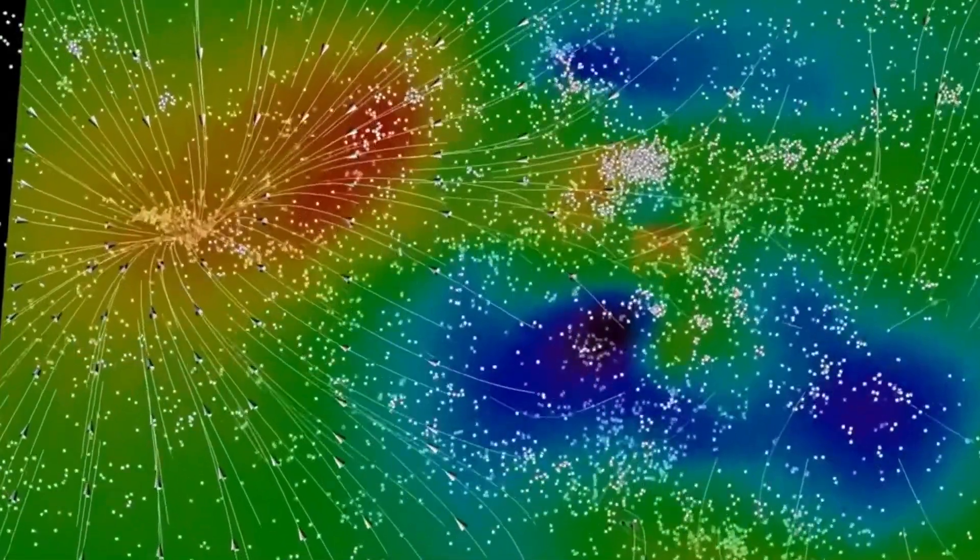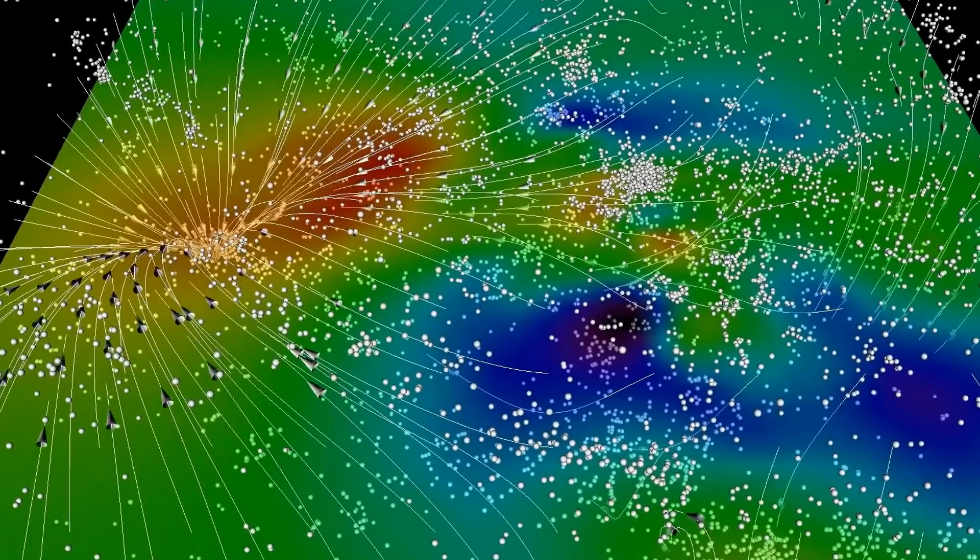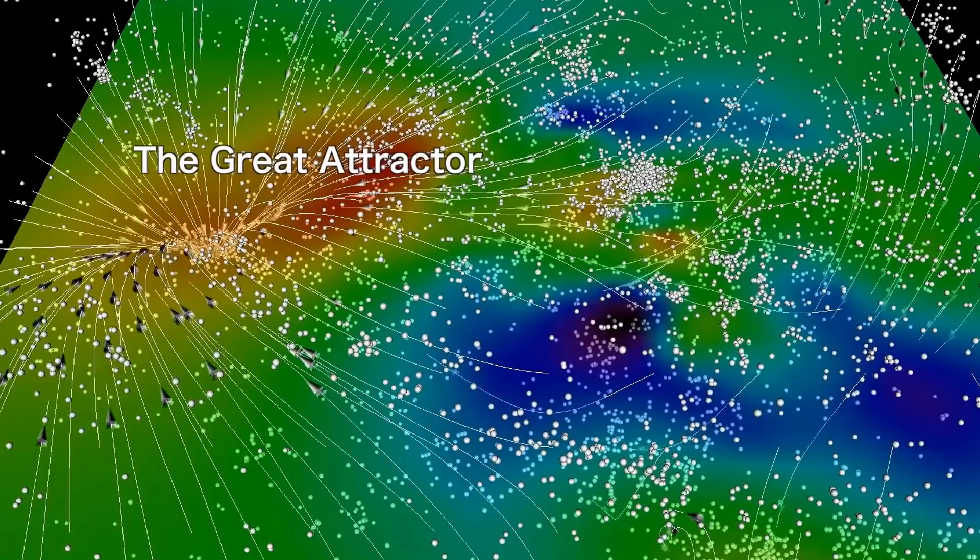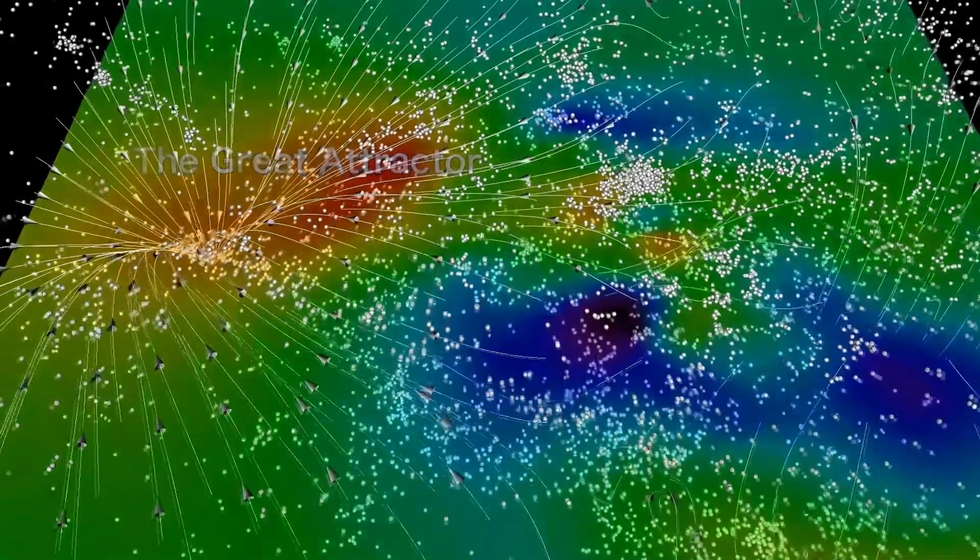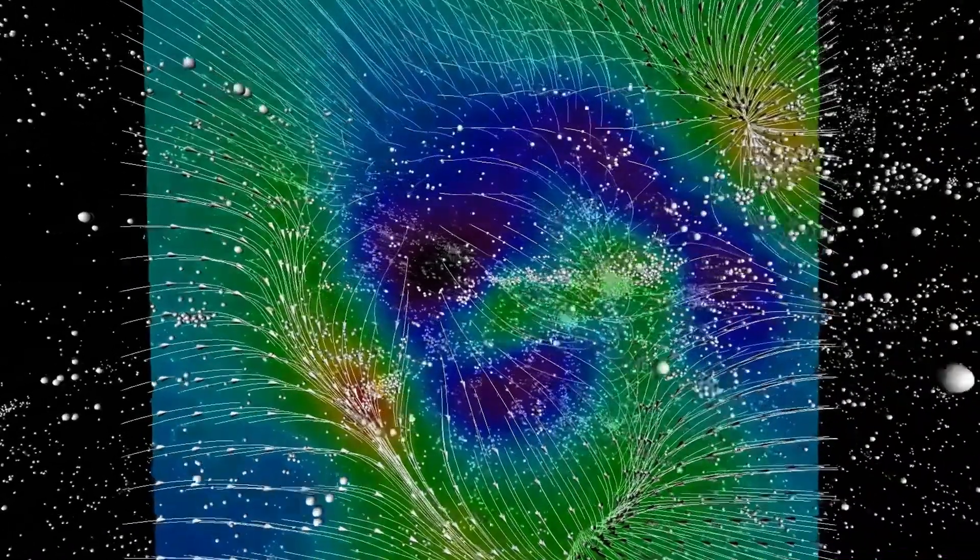The Great Attractor is a gravitational anomaly that appears to be pulling galaxies towards it at a remarkable speed of over 600 kilometers per second. Its location behind the Milky Way's densest regions makes it challenging to observe directly. Instead, scientists have been studying its effects on the surrounding galaxies, which has led to some fascinating discoveries.